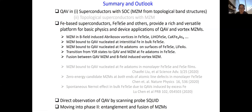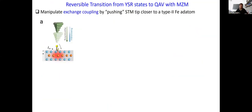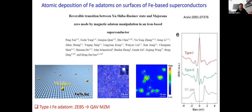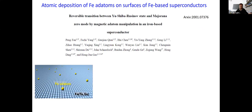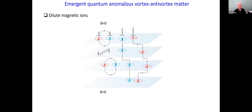Thank you very much for this really rich talk. I see a hand raised by Andre. A question from Zicheng: you've argued that the quantum anomalous vortex exists because it preferentially binds to a local ad-atom site and the energy of nucleating that vortex exceeds the line tension. So why would you have two kinds of ad atoms?